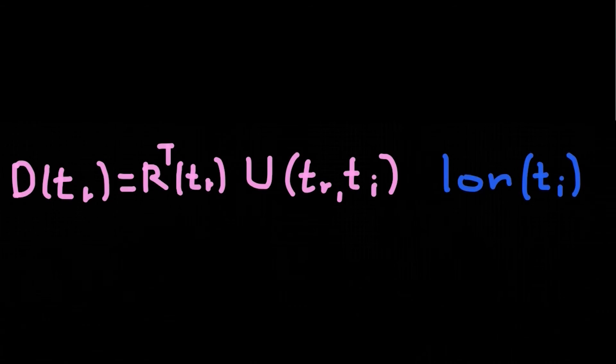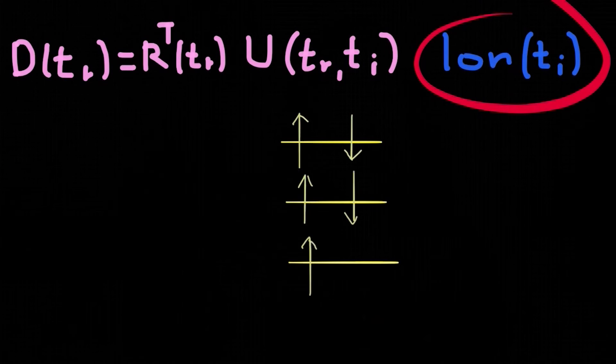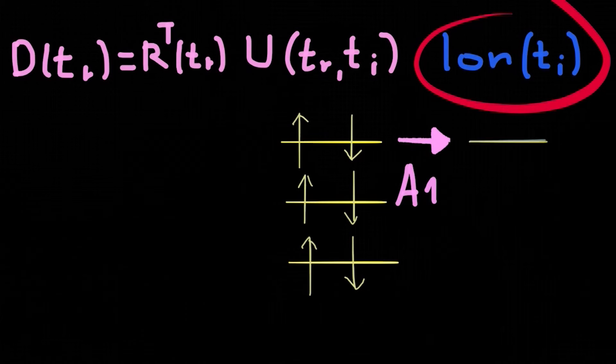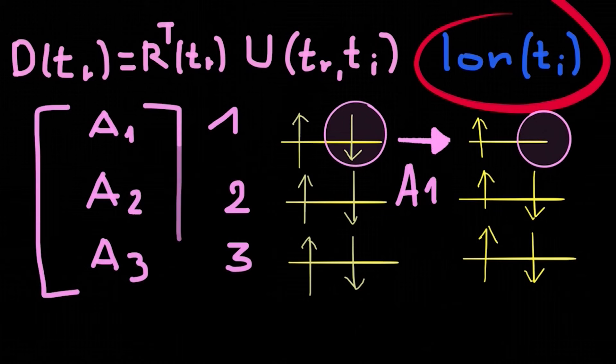The rightmost term in this expression is the ionization vector. Indeed, we can remove electron from any orbital, from different orbitals. And for each orbital, we have an ionization amplitude.